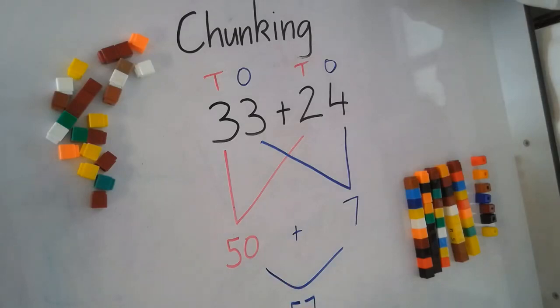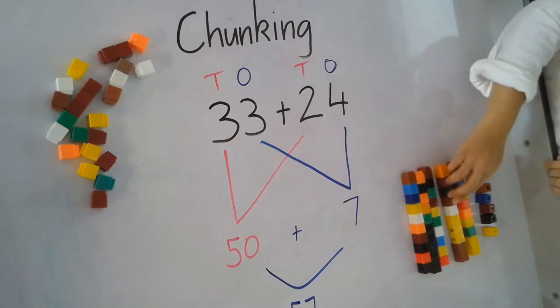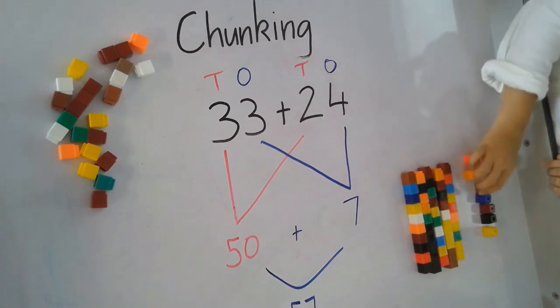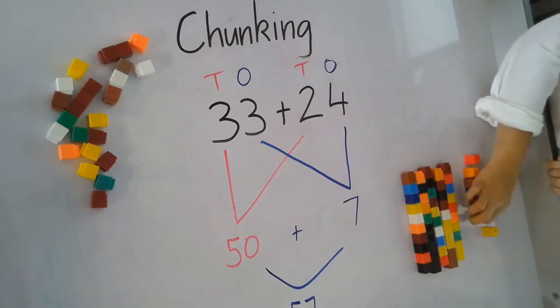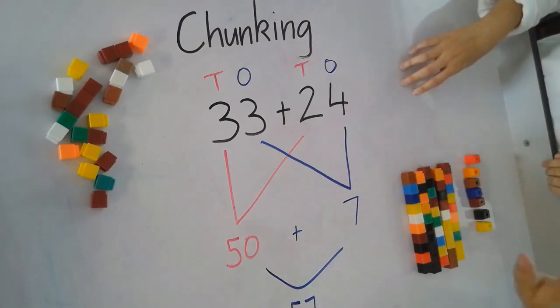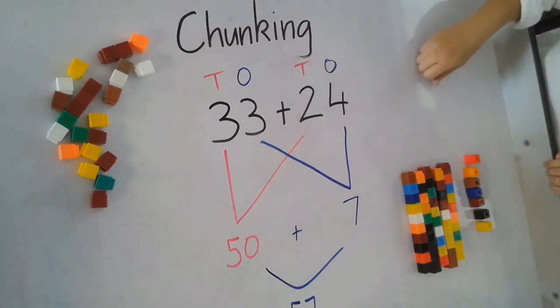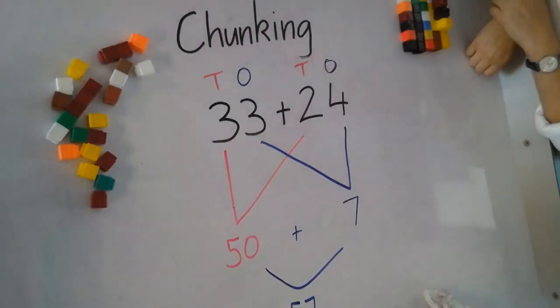So that's easy for me to add up. Much easier than 33 plus 24. And I'm going to check mine. 10, 20, 30, 40, 50, 51, 52, 53, 54, 55, 56, 57. Great work Ms. Kahn. We also need to remember to finish the sum at the top here. So 33 plus 24 equals 57.